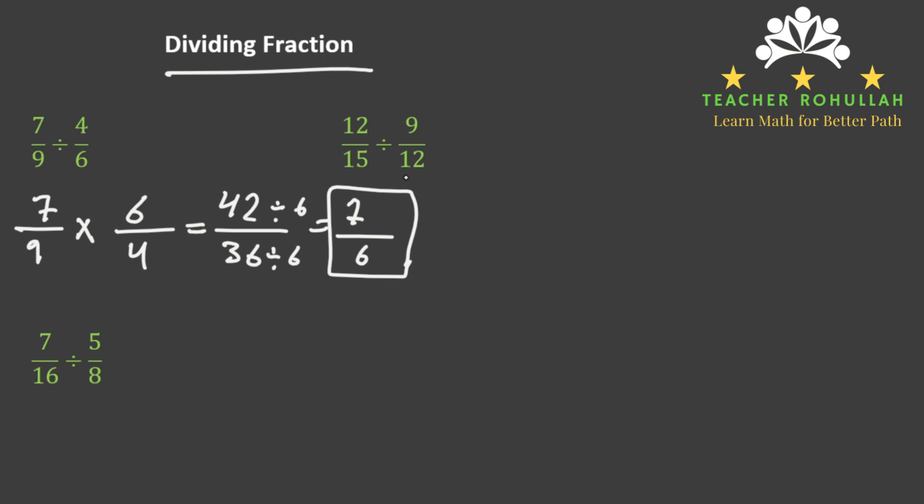In the second example we have 12/15 divided by 9/12. To divide 12/15 by 9/12, we write the first one the same: 12/15 times the inverse of the second one, which is 12/9.